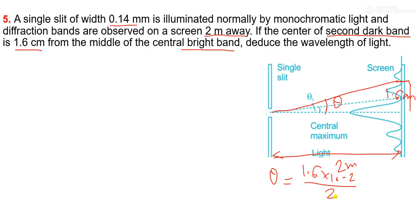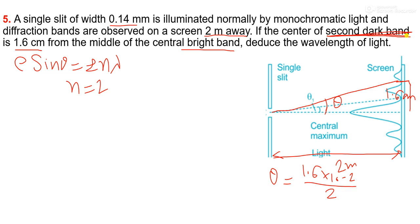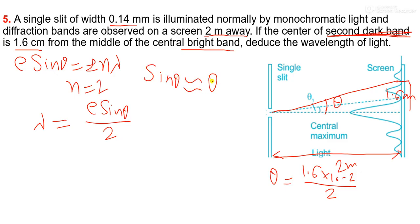The condition of minima is e sin theta equals plus minus n lambda, and here n equals 2 for the second dark band. So e sin theta equals 2 lambda, and from here lambda equals e sin theta by 2. Since sin theta is very small, sin theta is approximately equal to theta. So lambda equals e into theta by 2. The value of e is 0.14 mm, which is 0.14 into 10 to the power minus 3 meters, and theta is 0.8 into 10 to the power minus 2.